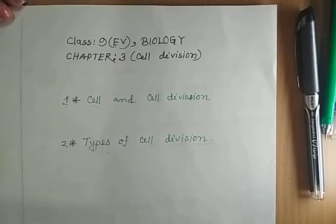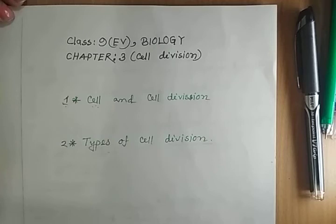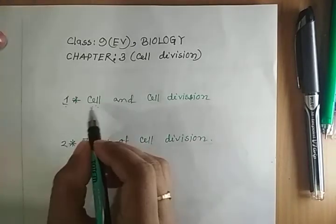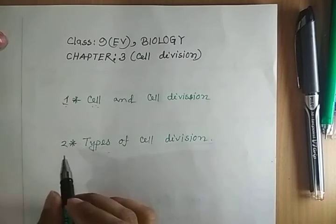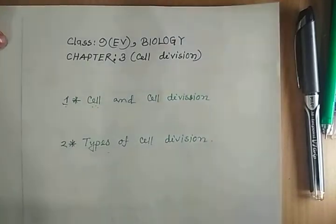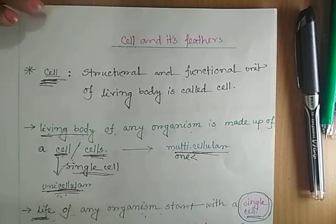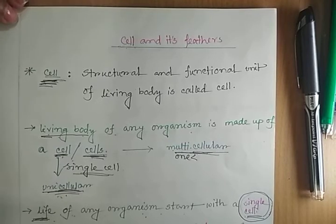Dear students, I hope all of you are okay. As you know, I am presenting a shortcut class. Today I am going to prepare a class for Class 9 English version, subject Biology, Chapter 3: Cell Division. This topic has three separate segments: firstly, cell and cell division; secondly, types of cell division. First of all, we are going to discuss the cell and its features, that means characteristics of cell.